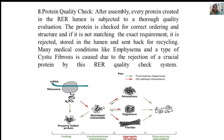The endoplasmic reticulum also carries out protein quality checking. After assembly, every protein created in the endoplasmic reticulum is subjected to quality evaluation — checked for correct ordering and structure. If it does not match the exact requirement, it is rejected or stored in the lumen and sent back for recycling. Medical conditions like emphysema and cystic fibrosis are caused by the rejection of crucial proteins by this quality check system. If a protein is misfolded, it is degraded or recycled. The ER produces various protein forms such as oligomeric proteins, fibrils (muscle proteins), and amorphous proteins.